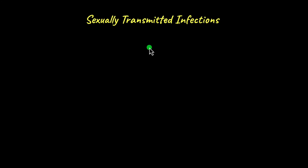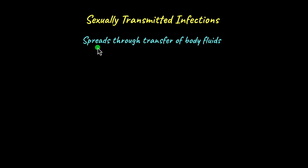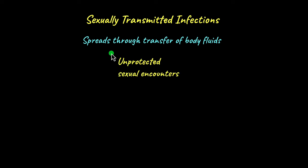In this video we're going to talk about some common sexually transmitted infections and then we'll focus on how to prevent these infections from spreading. A sexually transmitted infection is an infection that spreads through the transfer of body fluids — anything present inside the body like blood, semen, etc. Through unprotected sexual encounters, these body fluids are transferred from one person to another.